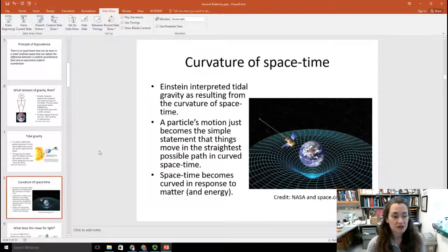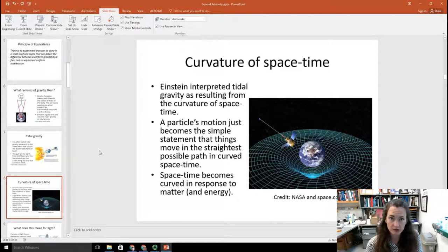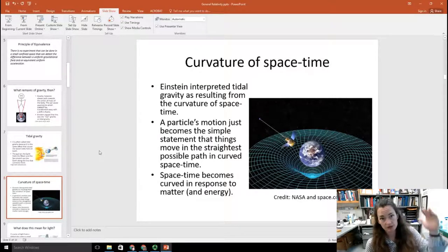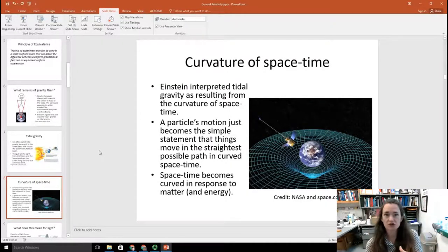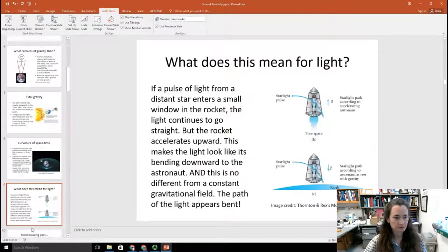So what he says is a particle's motion, if you think of spacetime as curved, just becomes the simple statement that things move in the straightest possible path in curved spacetime. And that spacetime becomes curved in response to matter and energy. So, in other words, things fall when I drop them. If I drop my keys, for example, it's going to fall. And that's just because it's following a path in curved spacetime that makes it want to travel towards the center of the earth. And that's why it falls down. You can repeat that experiment again and again, and it's going to travel through space, following along, rolling around in curved spacetime. And that's why objects are attracted to one another.